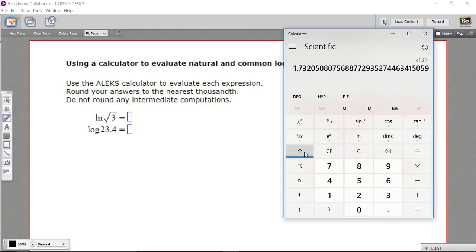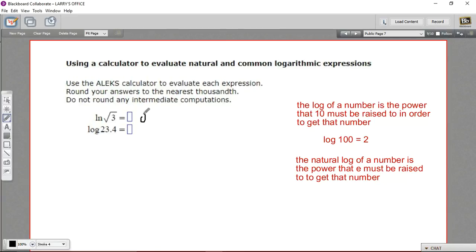So I'll press 3 and let me get my square root key here. And I'm going to do my inverse or second function. And I'm going to take the natural log of that. So the natural log is 0.549. We're going to the nearest thousandth. So 0.549.